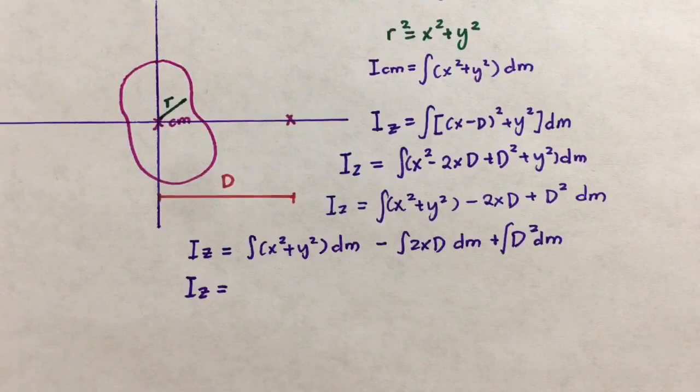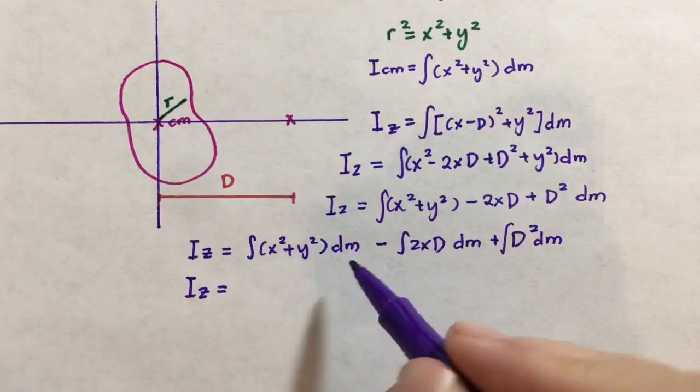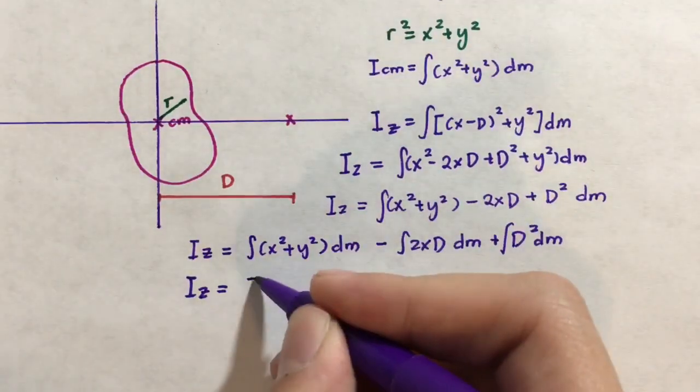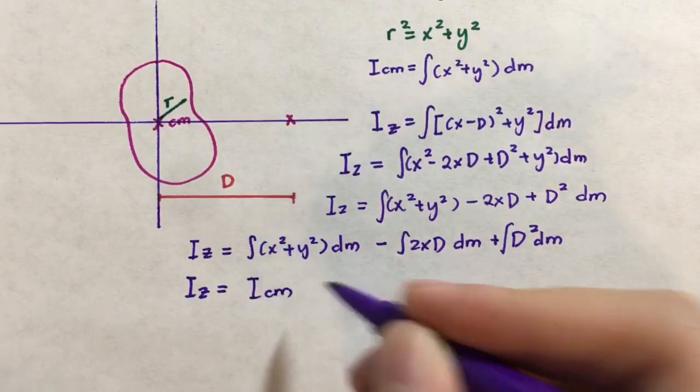Now we can proceed with the rest of the proof. By definition, we had already said that the integral of x-squared plus y-squared dm is equal to the original ICM.